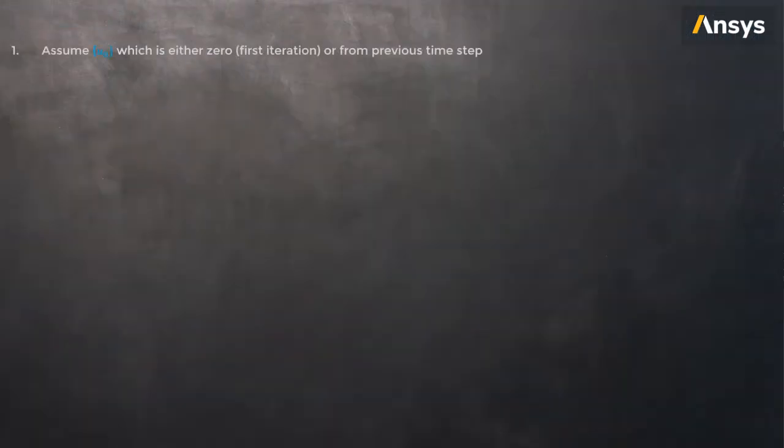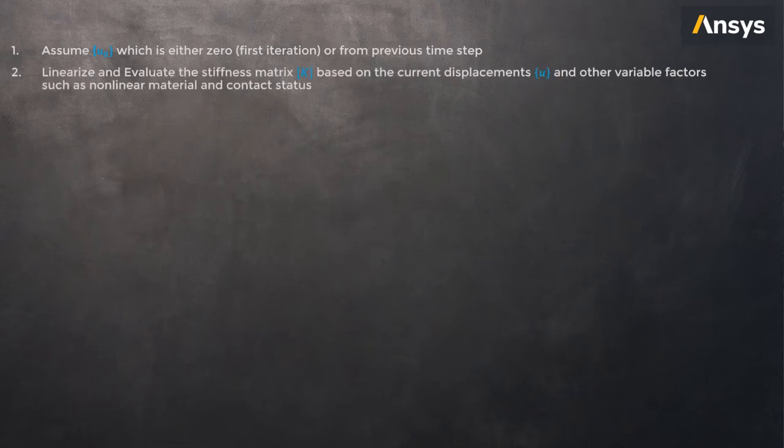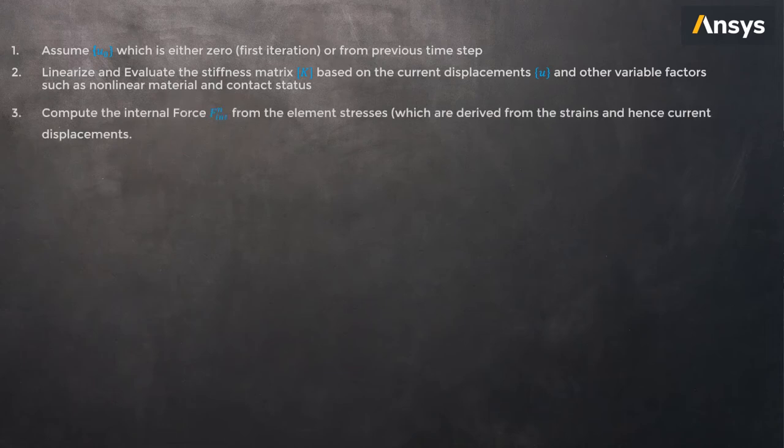To summarize the procedure: One, start with zero displacement or displacements from the previous time step. Two, linearize and evaluate the stiffness matrix K based on the current displacements U and other variables such as nonlinear materials and contact status. Three, compute the internal forces from the element stresses which are derived from the strains and hence the current displacements. Four, calculate the displacement increment delta U using this equation of the applied force, the internal force, and the stiffness matrix.